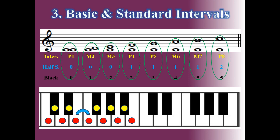DO to the higher DO is the octave. Octave is always the eighth interval, and we call it the perfect eighth interval. The perfect eighth interval has eight white keys, five black keys, and two half steps.